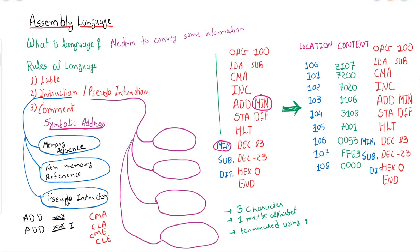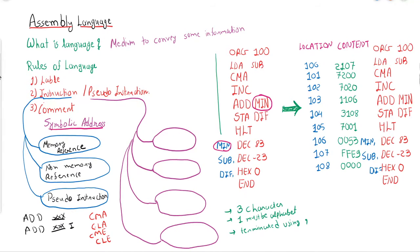The third category is pseudo-instruction. A pseudo-instruction is a type of instruction that does not perform any operation on data. Unlike memory reference, register reference, or input-output instructions — which deal with data directly or indirectly — pseudo-instructions do not perform data manipulation, data transfer, or program control operations. Instead, they give information or directives to the assembler.